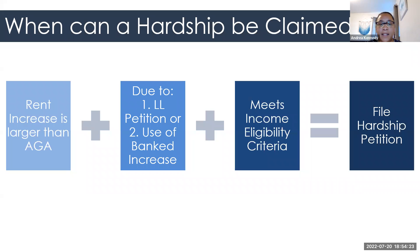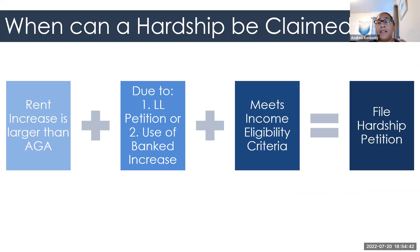If you receive a rent increase higher than the allowed AGA for the year, it will be because either a landlord had filed a petition to increase the rent or they used one of those banked rent increases. The other thing that comes into play when we're talking about hardship petitions is income eligibility limits. If you meet all of those criteria, you would be able to file a hardship petition.